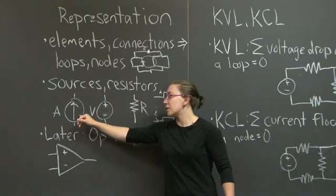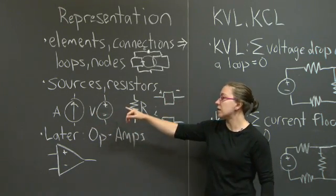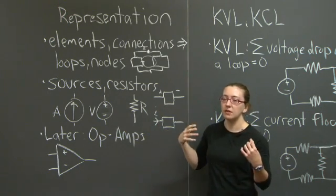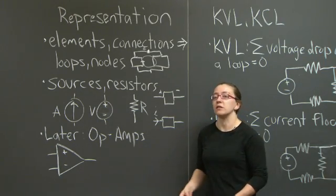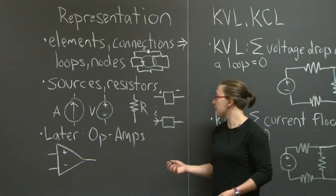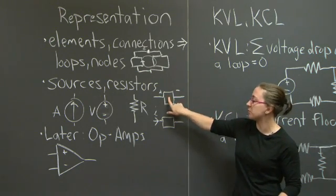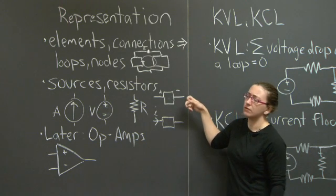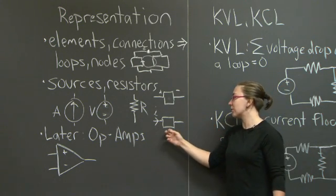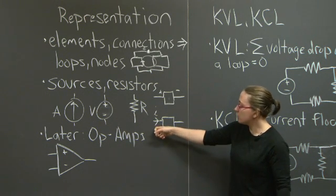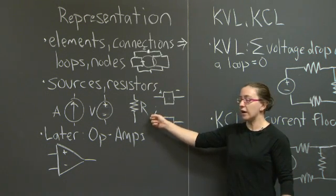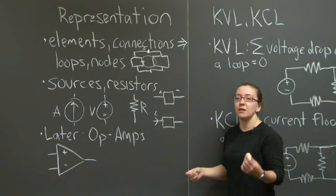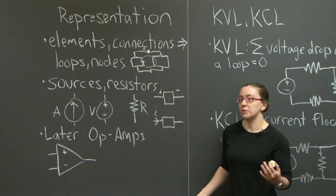The sources we'll use are independent current and voltage sources. We'll use resistors to adjust the amount of voltage and current we're dealing with, and then sample either the current or the voltage at a particular point in the circuit. On a circuit diagram, when you're interested in the voltage drop across an element, you indicate it with a plus and minus sign showing directionality. When you're interested in current, you label it i with a subscript and use an arrow indicating direction of current flow to avoid sign errors.